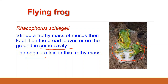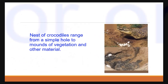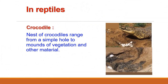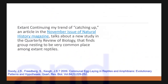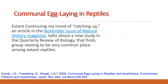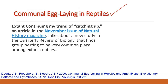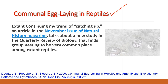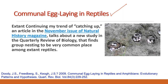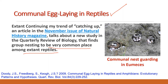The eggs are then laid in this mass to provide them protection. In case of reptilians, nests of crocodiles range from a simple hole to mounds of vegetation and other material, and eggs are laid in these nests. Communal egg laying is also found in reptiles. There is an article in the November issue of Natural History magazine which talks about a new study in the Quarterly Review of Biology that finds group nesting to be very commonplace among extant reptiles.